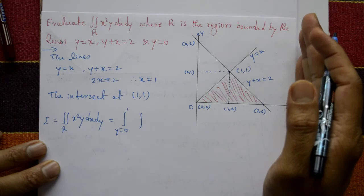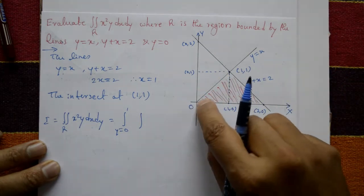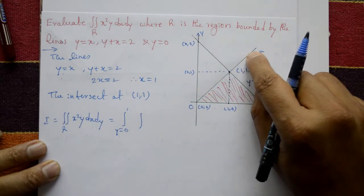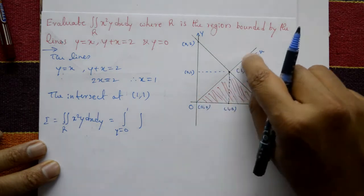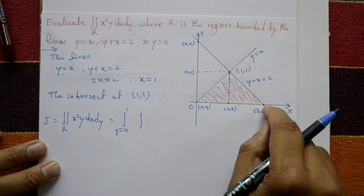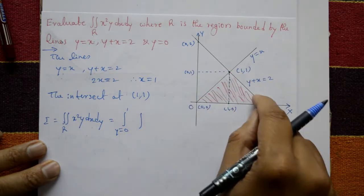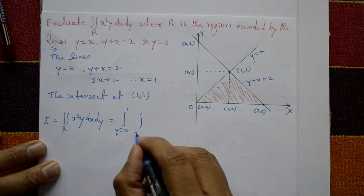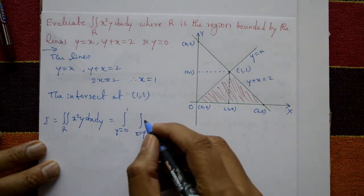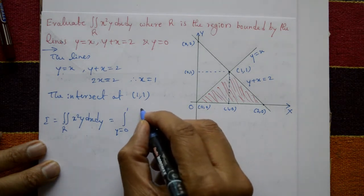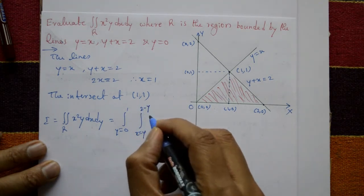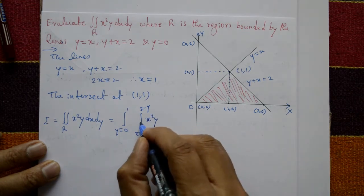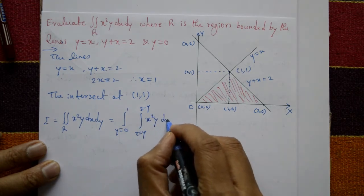Then x goes left to right: left curve means x equals y, and right curve means the straight line x equals 2 minus y. So x ranges from y to 2 minus y, and the function is x squared y, integrating first with respect to x then with respect to y.